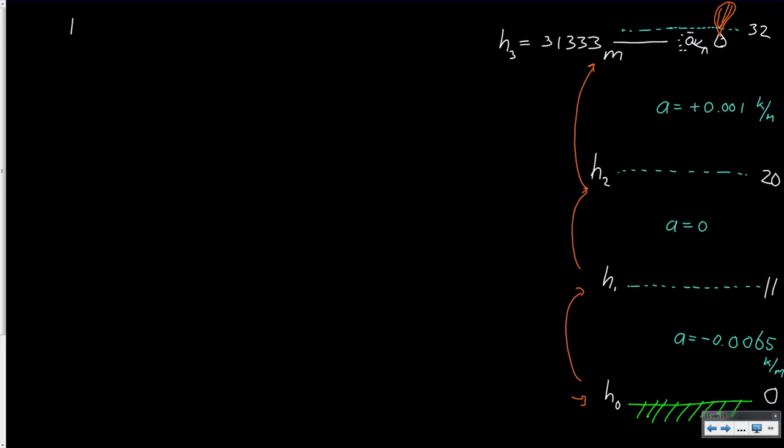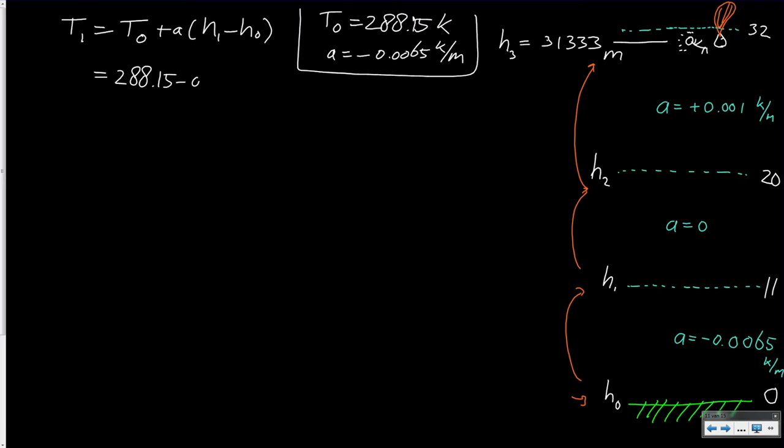The temperature T1 is given as T0 plus A times the difference in altitude. In this case, we use the sea level values which are given: T0 is 15 degrees Celsius, which is 288.15 Kelvin. The lapse rate was given as minus 0.0065 Kelvin per meter. So using this equation we can calculate the temperature at the top of the troposphere: 288.15 minus 0.0065 times 11,000 minus 0, and this equals 216.65 Kelvin, which is our T1.